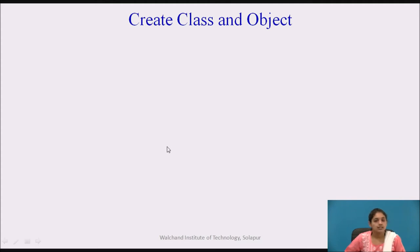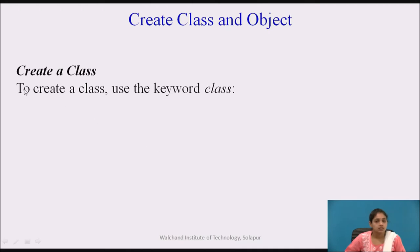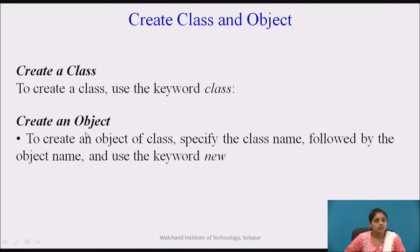How to create a class and object. To create a class, use the keyword 'class'. To create an object, specify the class name first — to which class it belongs — followed by the object name. Then use the keyword 'new' followed by the class name again.